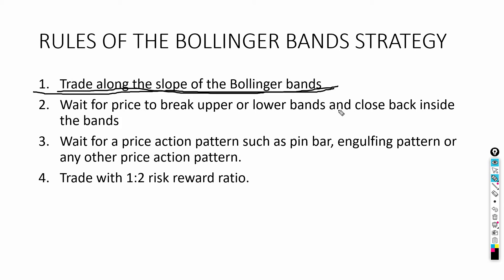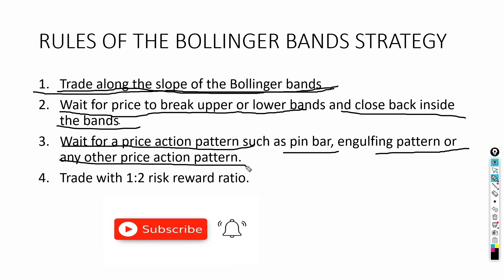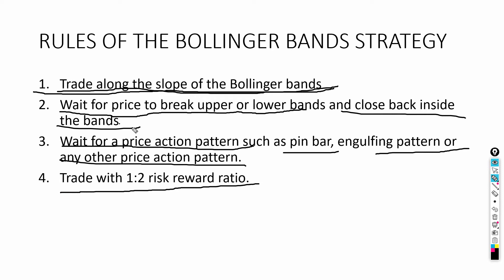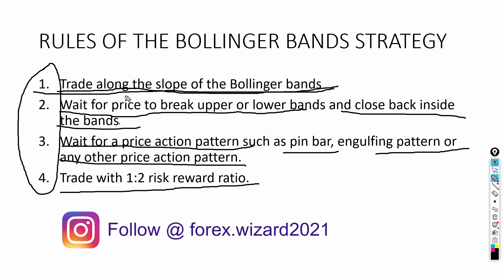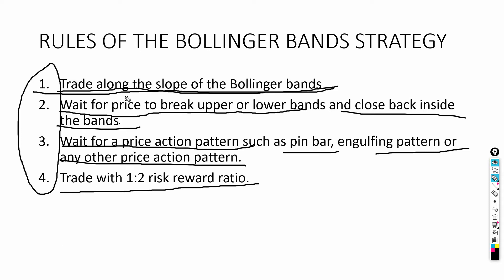Rule number two: wait for price to break the upper or lower band and close back inside the bands. Rule number three: wait for a price action pattern such as a pin bar, engulfing pattern, or any other price action pattern formed at the edge of the Bollinger Band. Rule number four: trade with a one-to-two risk-to-reward ratio. As a disclaimer, no strategy in the world will give you 100% winning rate — there will be losing trades — but over the long term you will become profitable as long as you manage your risk and follow the rules. I'll show you backtested results so you know this strategy works.